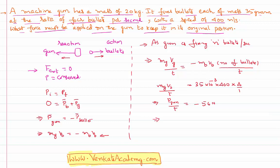In a way, rate of change of momentum is the force itself. So the recoil force with which the gun is moving in the backward direction is minus 56 newtons.